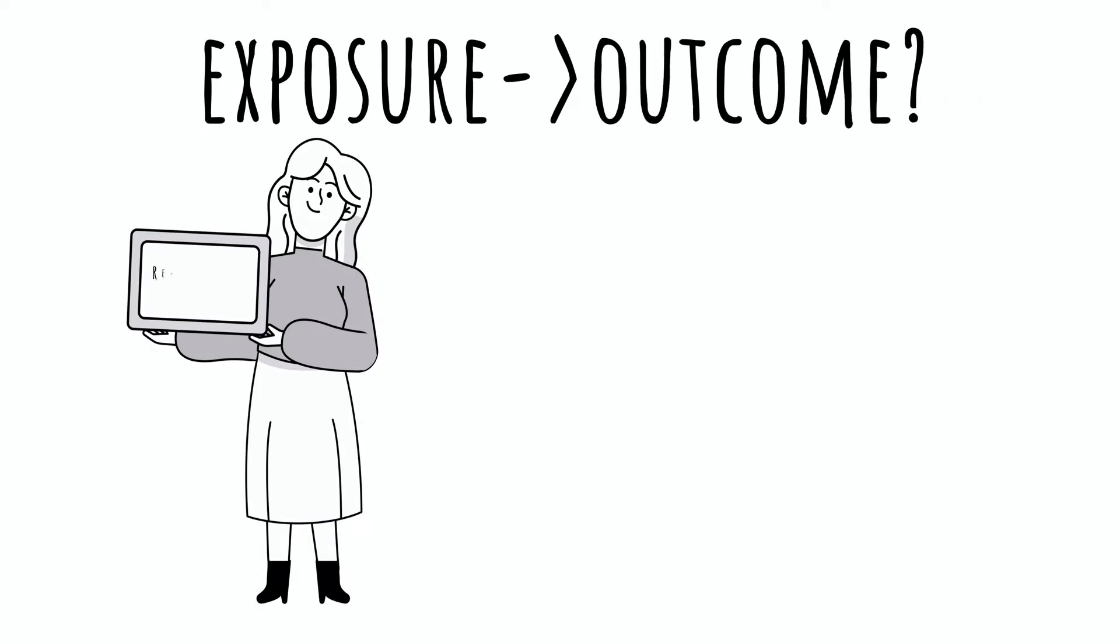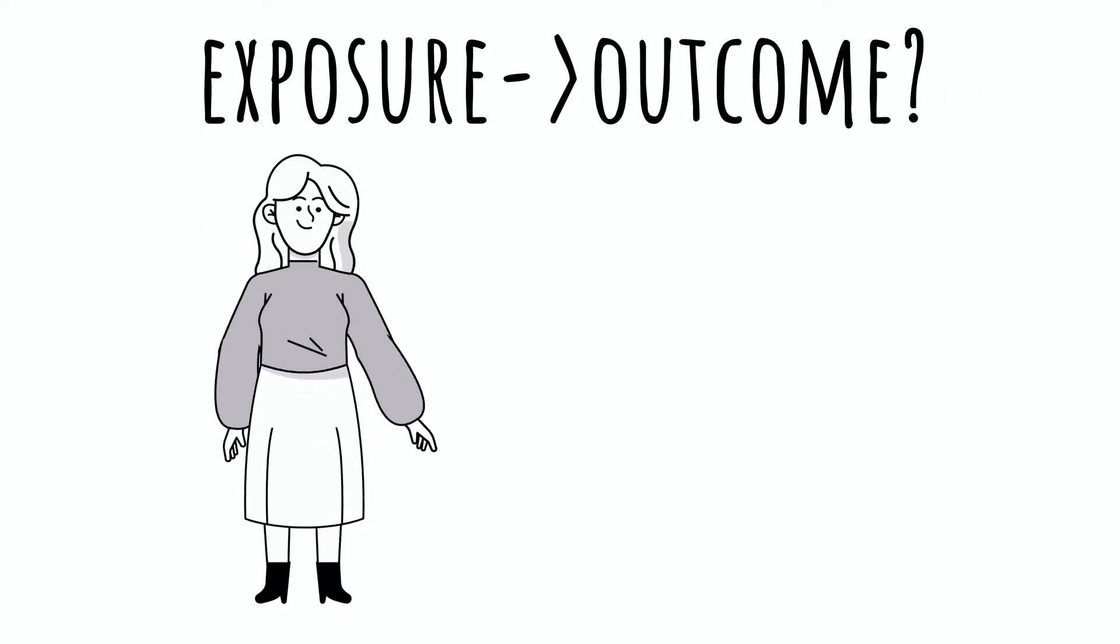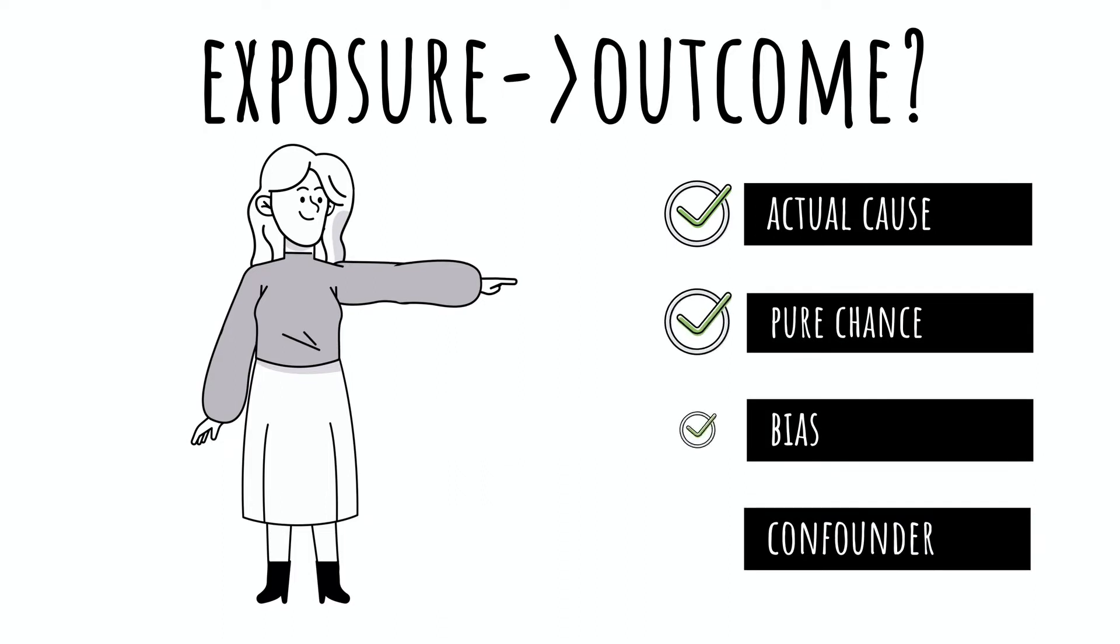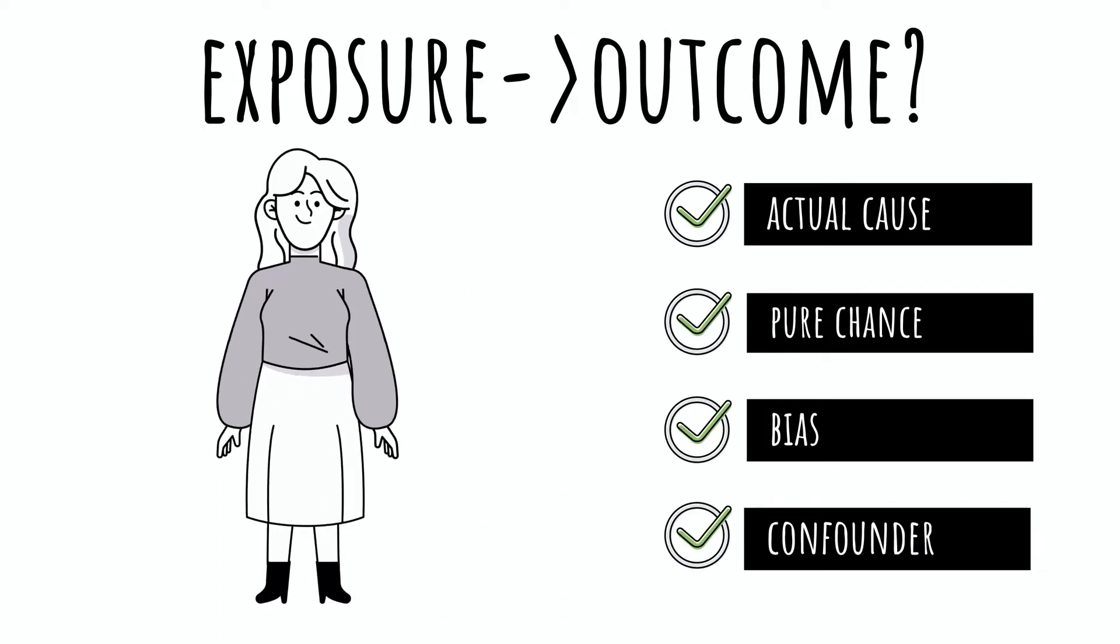Making sense of epidemiological data is often hard. We should not jump to the wrong conclusion. There are a number of reasons why we might see an association. It may be actual cause, pure chance, bias, or confounding factors.